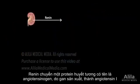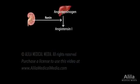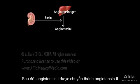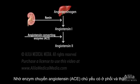Renin converts a plasma protein called angiotensinogen, produced by the liver, into angiotensin 1, a peptide of 10 amino acids. Angiotensin 1 is further converted into angiotensin 2, an 8-amino acid peptide, by the angiotensin converting enzyme, ACE, predominantly present in the lungs and kidneys.